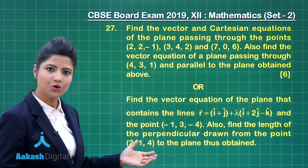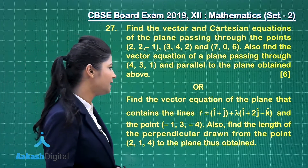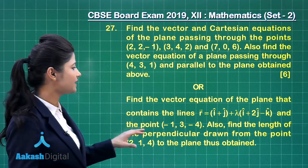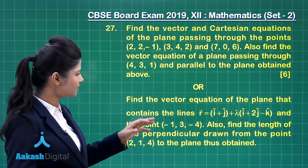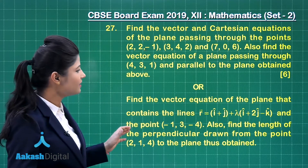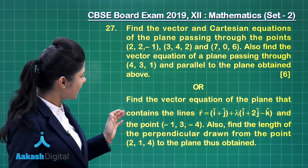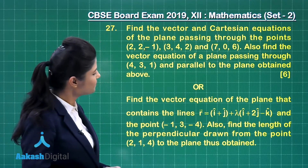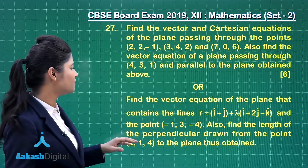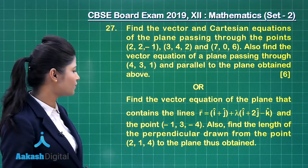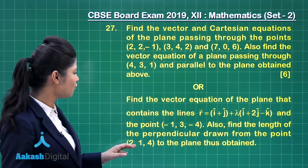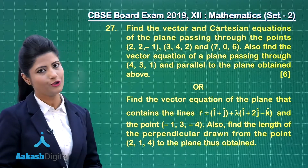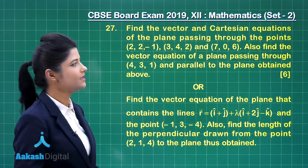In the second choice, it has been asked to find the vector equation of the plane that contains the line R vector and the point having coordinates (-1, 3, -4). Also, find the length of the perpendicular drawn from the point (2, 1, 4) to the plane thus obtained. Let us take up the first choice.